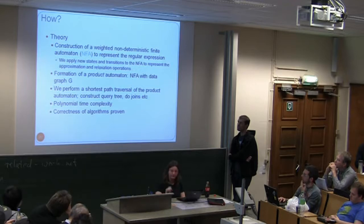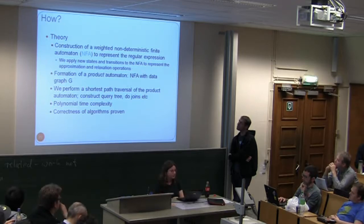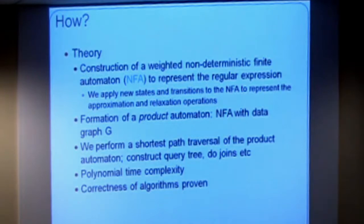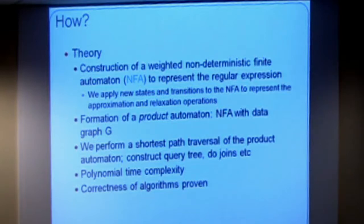How was this done? Regular expressions and NFAs are closely married. An NFA was taken and augmented - new states and transitions are added to reflect all the edit operations, as well as the inferencing from the ontology. This automaton is joined with a product graph with G, producing a product automaton that is traversed using least cost path traversal (note: not shortest path - that's a typo in the slides). The time complexity is quite good. The speaker is currently proving the correctness of the algorithms - that's the current focus, since an incorrect algorithm would be problematic.